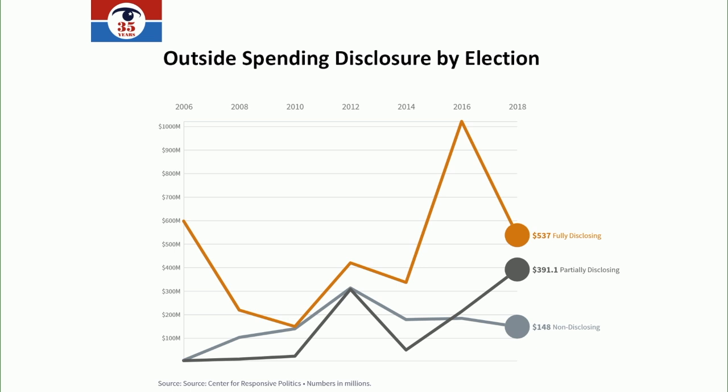Looking at outside spending disclosure by election: dark money remains a big source of cash but actually dropped in 2018. What has taken its place is gray money — partially disclosing groups. My view is that it gives donors a menu of options: if you don't mind press scrutiny you can disclose through the super PAC; if you want to fly under the radar you give to a C4 or C6 nonprofit, which might then give to the super PAC. Nearly $540 million last cycle was spent by groups that do not fully disclose their donors — a record for non-presidential years.